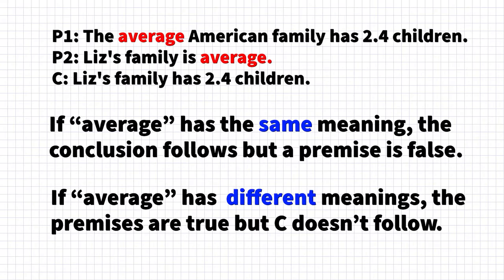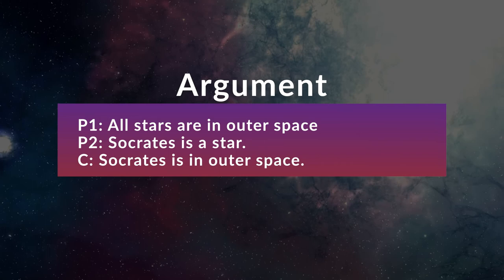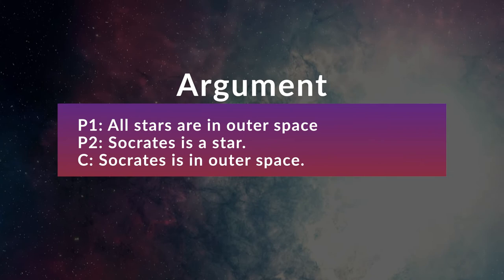Here's another simple example. All stars are in outer space. Socrates is a philosophical star. Therefore, Socrates is in outer space. Here again, we have the three conditions met. There's the ambiguous term 'star,' which has two distinct meanings: one refers to a celestial object, and the other refers to a really popular individual. The conclusion would only follow if 'star' had the same meaning throughout.